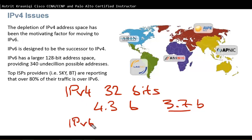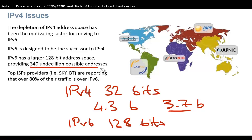IPv6 is made out of 128 bits, and with 128 bits we get just over 340 undecillion possible addresses — that is 340 followed by 36 zeros. That's a lot of addresses available with IPv6.